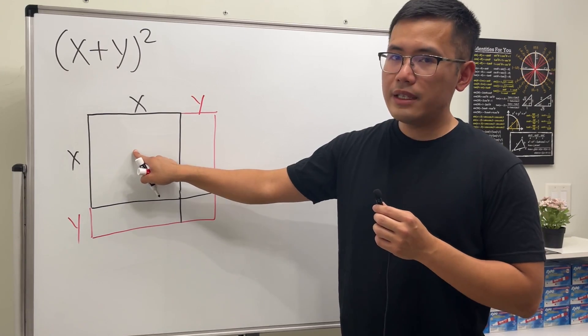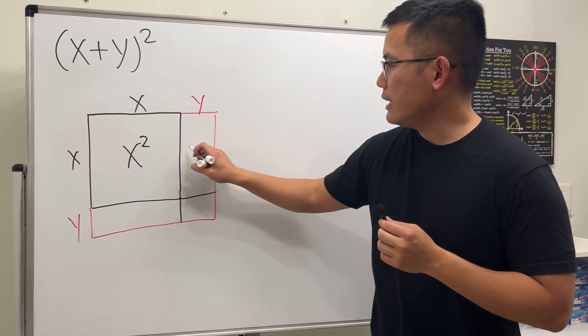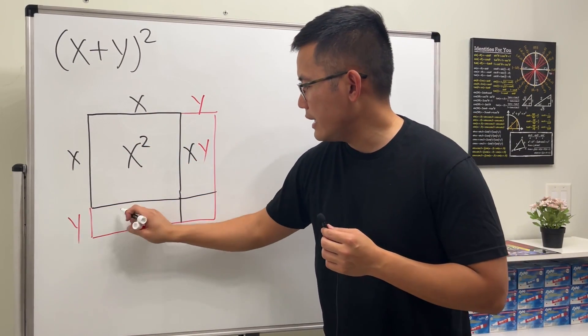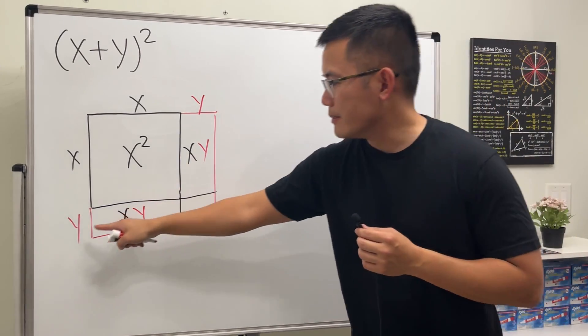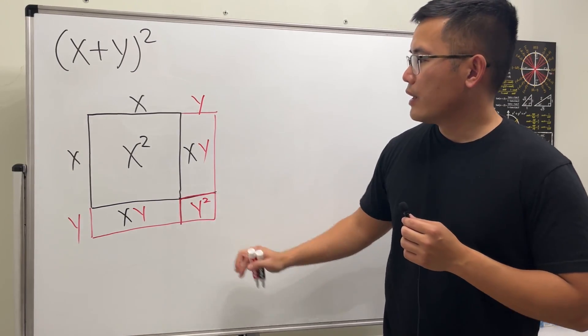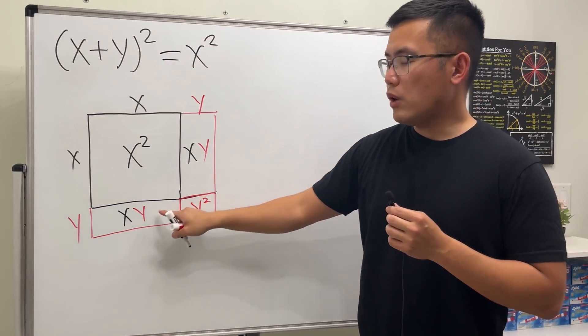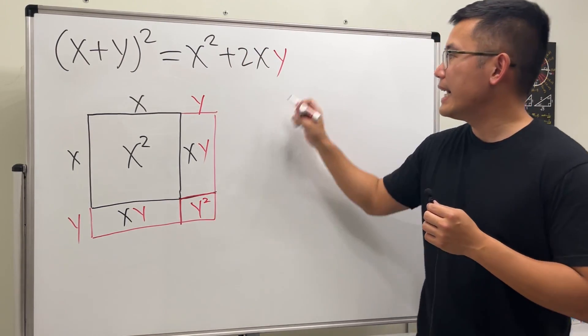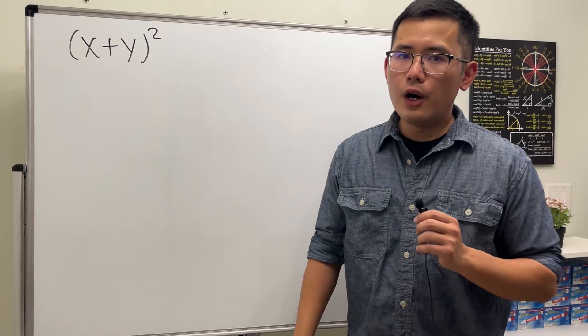Really cool, huh? And then we can see that this area is x times x, so that's x square. And this area is x times y, and then this area is x times y. And then lastly this little area is y times y, which is y square. So as you can see, altogether we have x square, and then we will have to add two of this, so that's plus 2xy, and lastly we will have to add y square. And that's the answer.